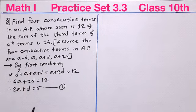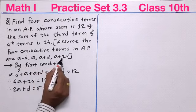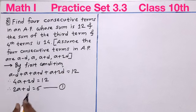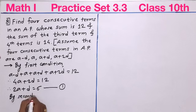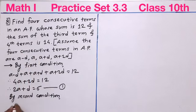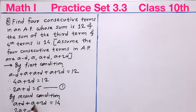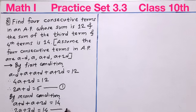Now using the second condition: the sum of the third term and the fourth term is 14. The third term is A plus D and the fourth term is A plus 2D. So: (A plus D) + (A plus 2D) = 14, which gives 2A + 3D = 14. We give this as equation number 2.